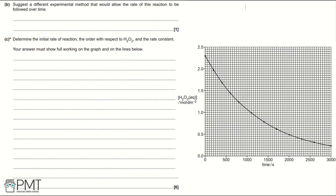Part B: Suggest a different experimental method that would allow the rate of this reaction to be followed over time. What the mark scheme is looking for is: measure mass lost. The way you'd do this experimentally is have the reaction take place on a mass balance and record the mass at time intervals — for example, every 5 or every 10 seconds. To get the mark, you need to say: measure mass loss.